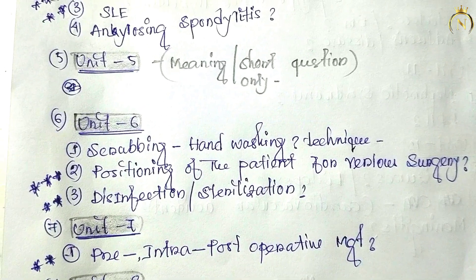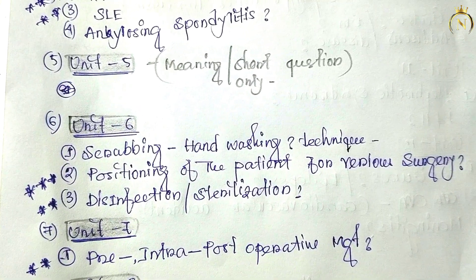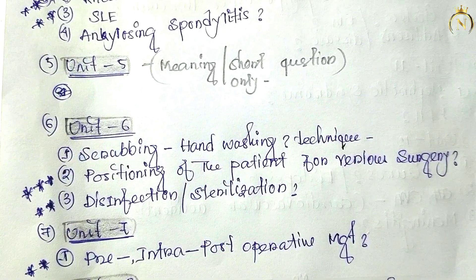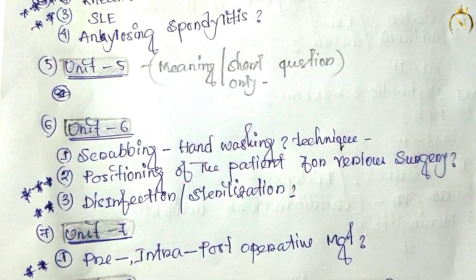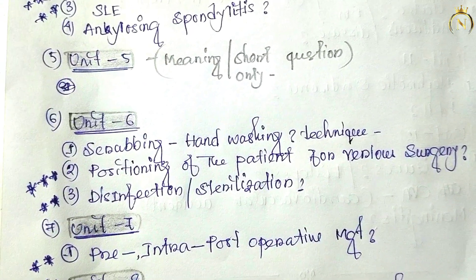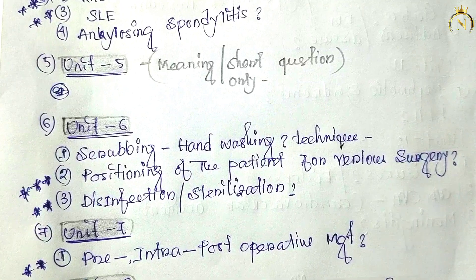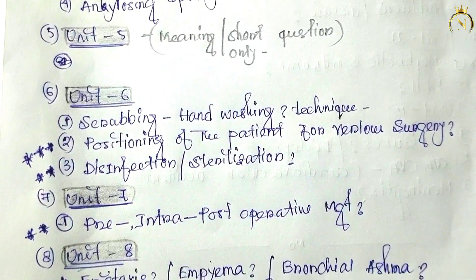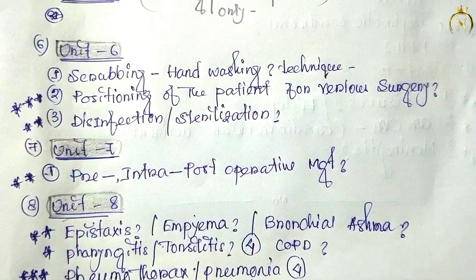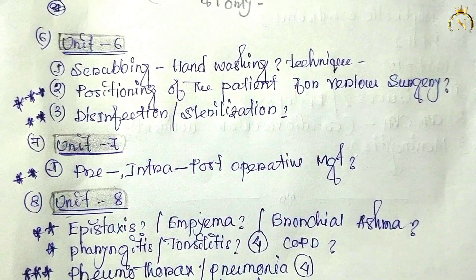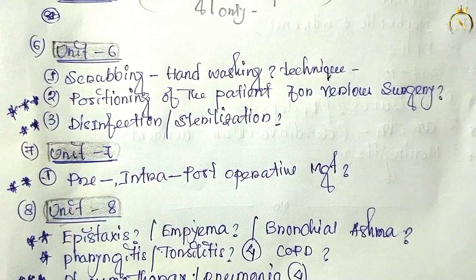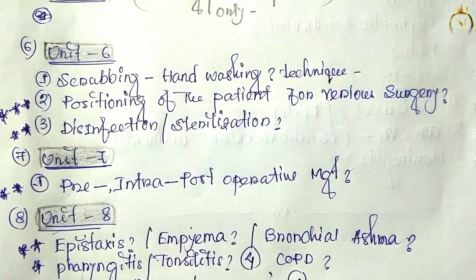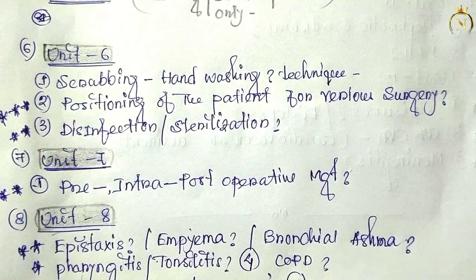Unit five is also not that much important — only meaning and short answer type questions like potassium, calcium, sodium values. They may ask this sometimes. Unit six covers operation theater preparation questions like scrubbing, hand washing technique, positioning of the patient for various surgeries — supine, prone, lithotomy position, and so on. Also infection control and sterilization procedures.